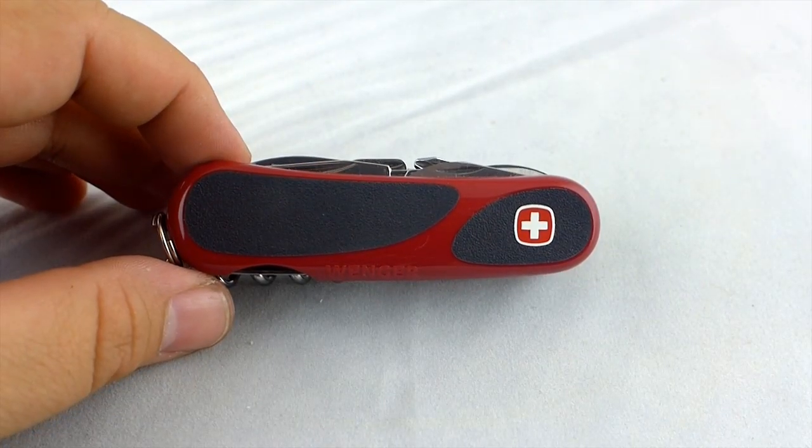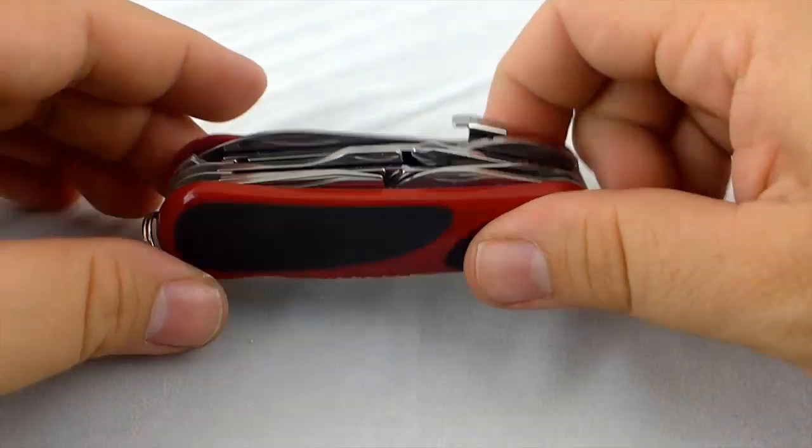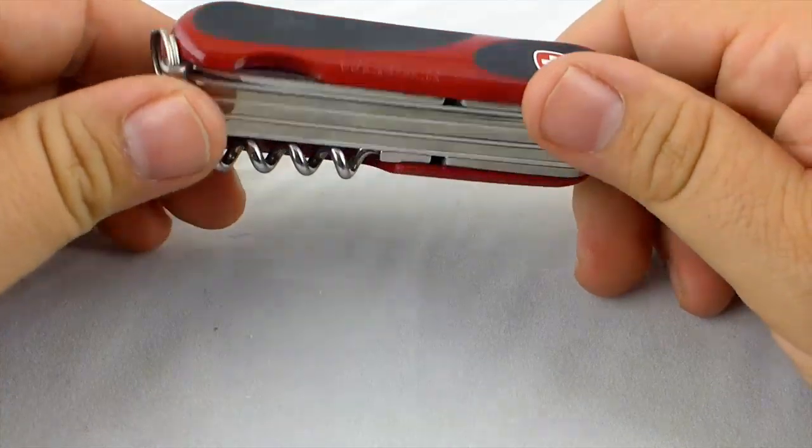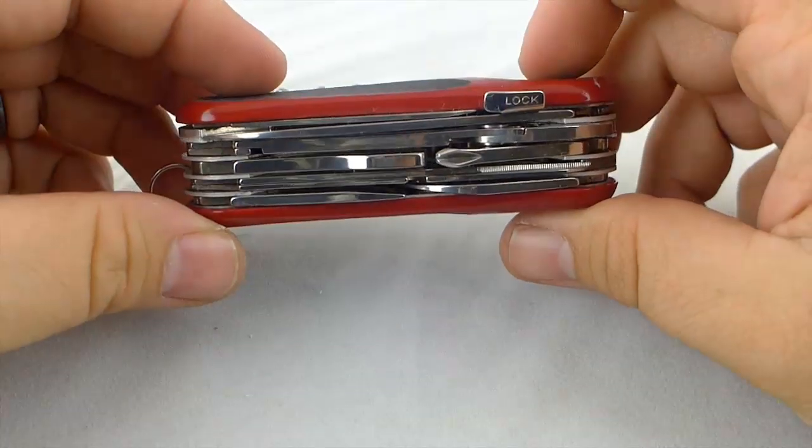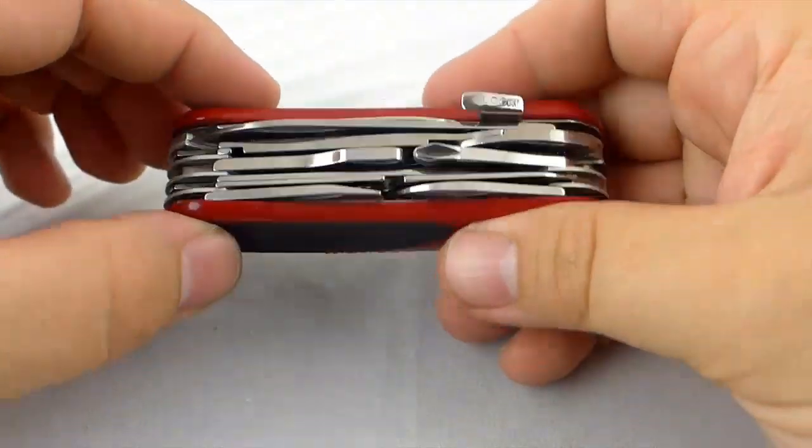This is the Wenger EvoGrip S557 Swiss Army pocket knife. Now this pocket knife has several tools on it.